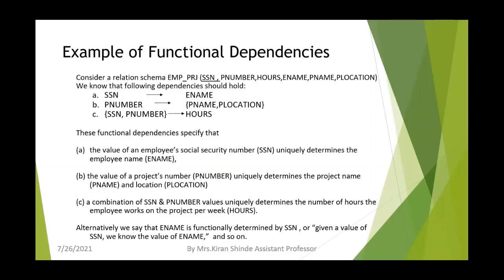The explanation is as follows: the value of an employee's social security number uniquely determines the employee name; the value of project number uniquely determines the project name and the location of the project; and a combination of SSN and project number uniquely determines the number of hours the employee works on that particular project. Alternatively, we say the employee name is functionally determined by SSN, meaning given the value of SSN, we know the value of employee name for sure.